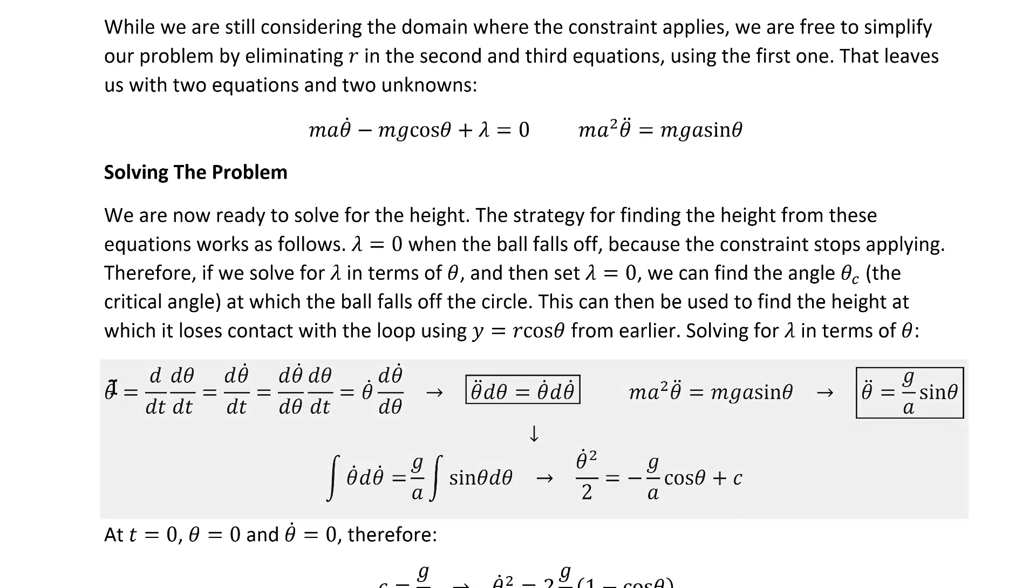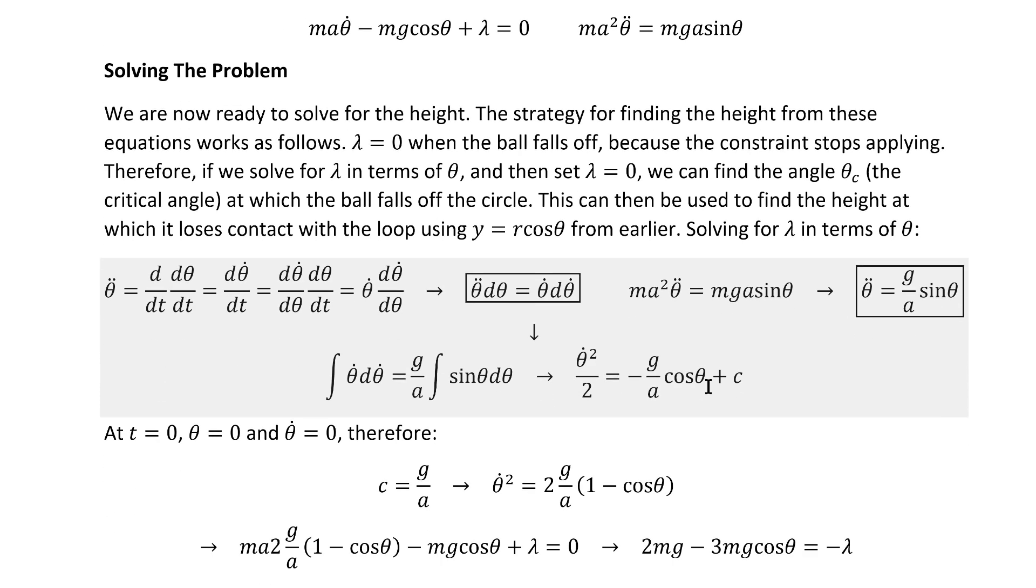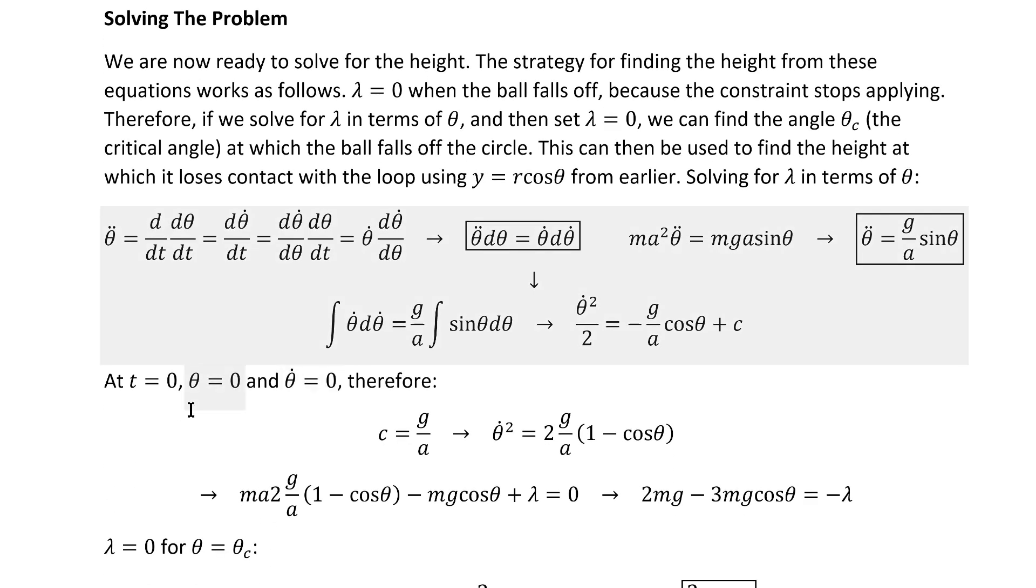Solving for lambda in terms of theta begins with this funky calculus trick, leveraging the chain rule that ultimately shows that theta dot dot d theta can be written as theta dot d theta dot, allowing us to turn this equation here into an integrable one. And it's at this point that we need those initial conditions that I talked about at the beginning. At t equals zero, theta equals zero, and theta dot equals zero.